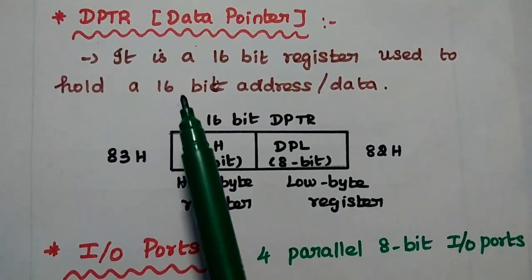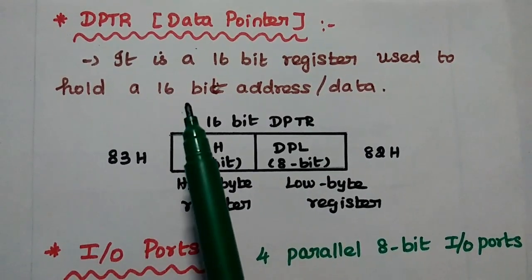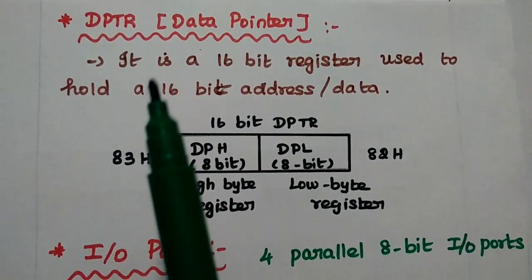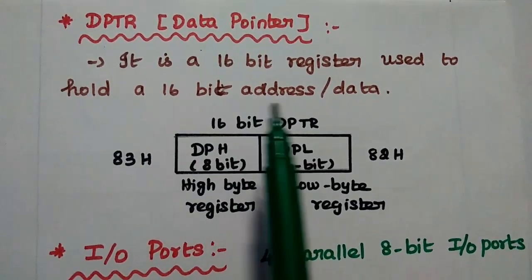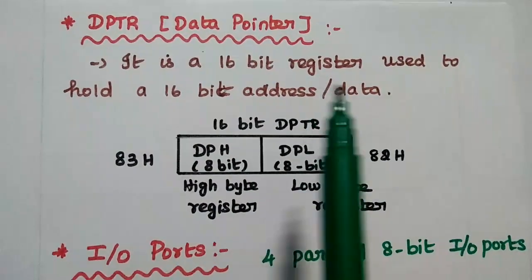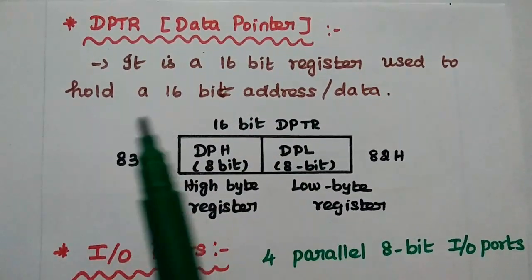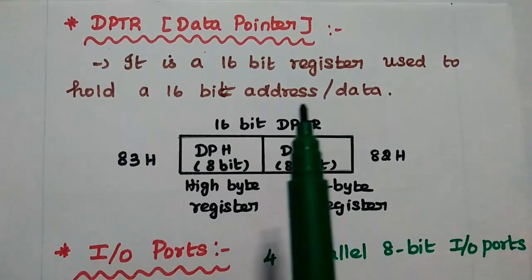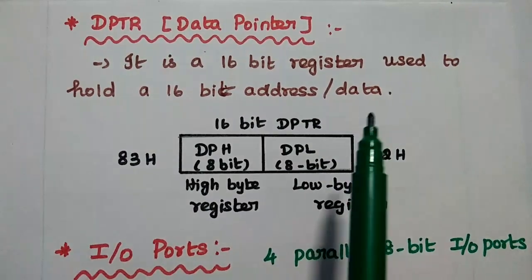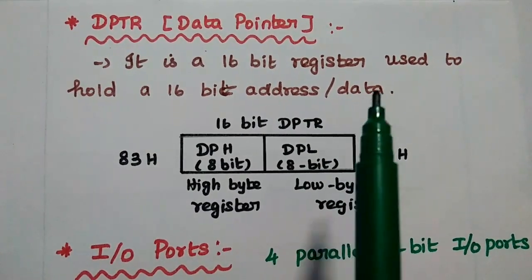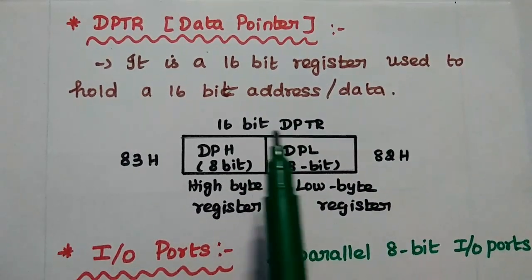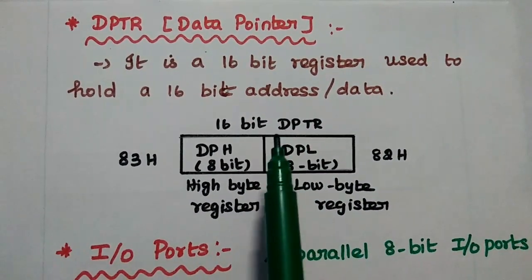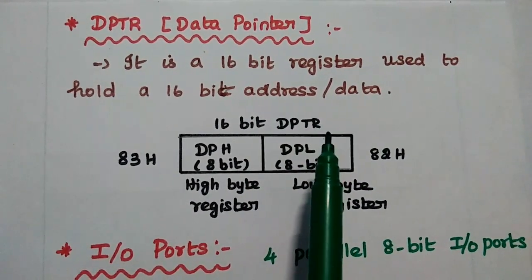The next one is the data pointer, DPTR. It is a 16-bit register used to hold a 16-bit address or data. It is widely used in jump and call instructions.